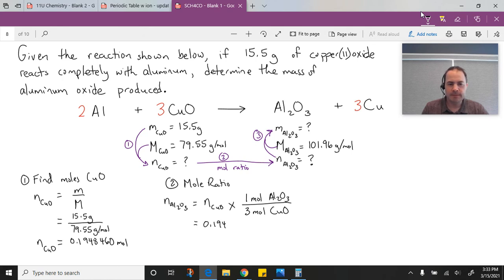Plugging in my number and multiplying by one-third to get the moles of aluminum oxide gives us 0.06494867 moles.